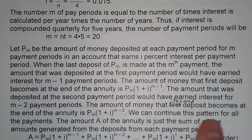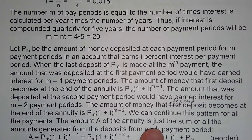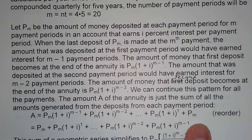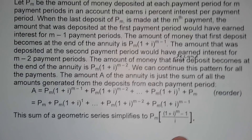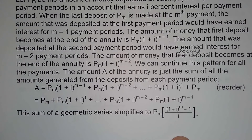We can continue this pattern for all the payments. The amount A of the annuity is just the sum of all the amounts generated from the deposits from each payment period — we just add them all up and reorder them. In mathematics this is known as a geometric series, and there's a formula that allows us to simplify our formula.